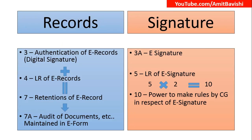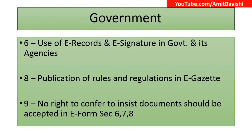Quick recap — Records, Signature, and Government. Records: Section 3 is authentication, Section 4 is legal recognition, 3 plus 4 equals 7 for retention, and the auditor 'A' enters the retention area of 7, giving Section 7A for audit of documents. Signatures: Section 3A is electronic signature, Section 5 is legal recognition of electronic signatures, and 5 to the power of 10 gives Section 10 — the power of the Central Government to make rules for electronic signatures. Government: Section 4 was legal recognition of records, Section 5 is for electronic signatures, Section 6 is use of e-records and e-signatures in government, Section 8 is eGazette, and Section 9 says you do not have the right to insist that documents must be accepted in electronic form.